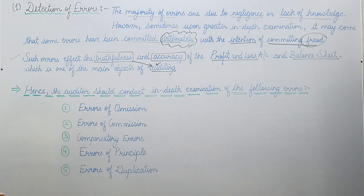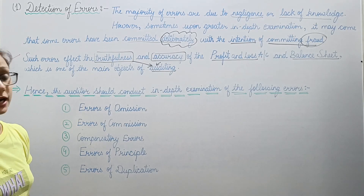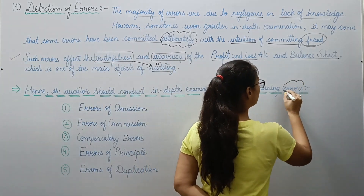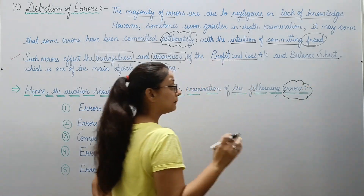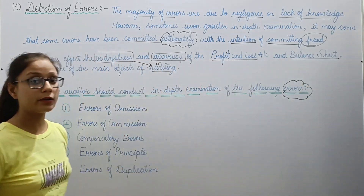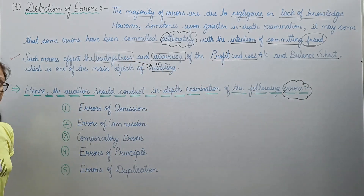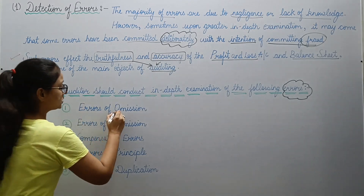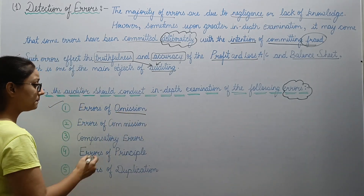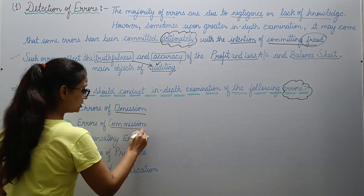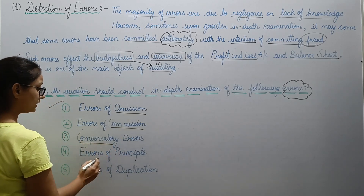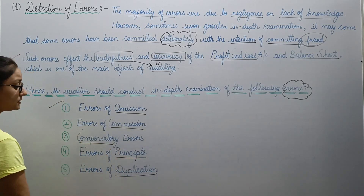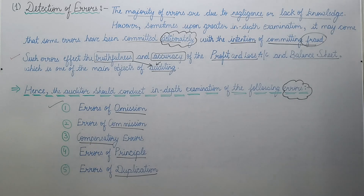Whenever an auditor conducts an examination, they must keep certain errors in mind, so that they can determine whether the accounts being audited contain any errors. The types of errors to keep in mind are: error of omission, error of commission, compensatory errors, error of principles, and lastly error of duplication.